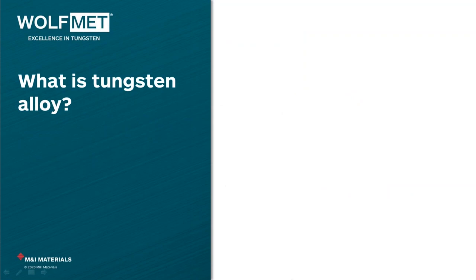Hello everybody. So what is tungsten alloy? In the great words of Spock himself, it's an alloy Jim but not as we know it. Tungsten alloy is actually a metal matrix composite consisting of tungsten particles in a metallic binder. In the following slides we're going to show you how we produce tungsten alloy and in doing so you'll hopefully be able to identify the aspects of a flexible manufacturing process that can be leveraged to your individual advantage.